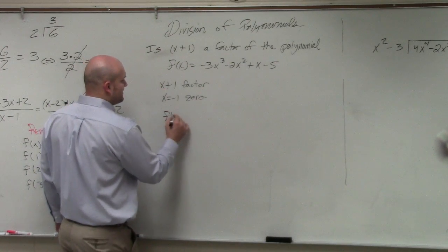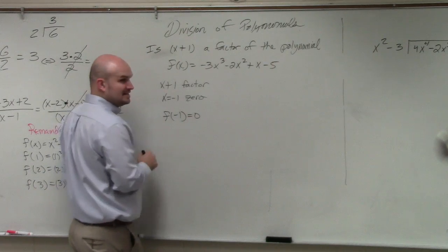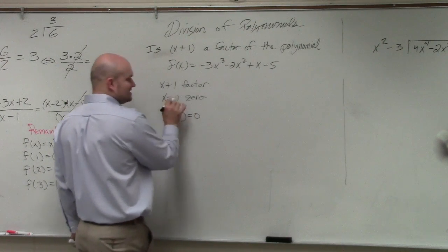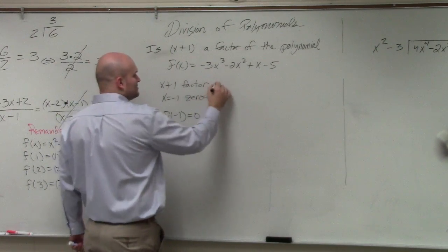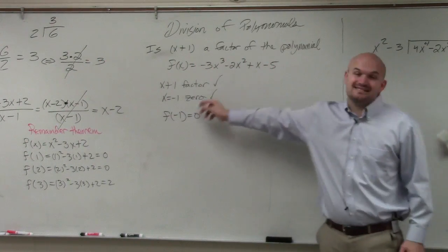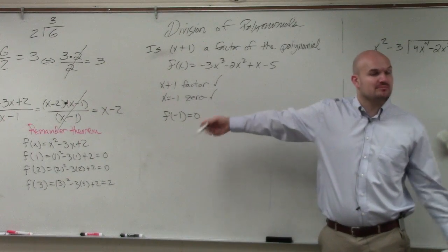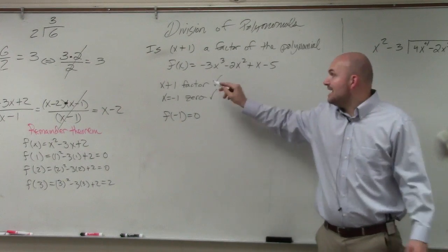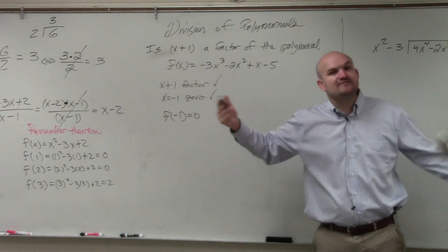Well, that means then if f of negative 1 is equal to zero, then x equals negative 1 is a zero and x plus 1 is the factor. So basically, if I plug in f of negative 1 and I get zero, then that tells me x equals negative 1 is a zero by the remainder theorem, and x plus 1 is a factor by the factor theorem.